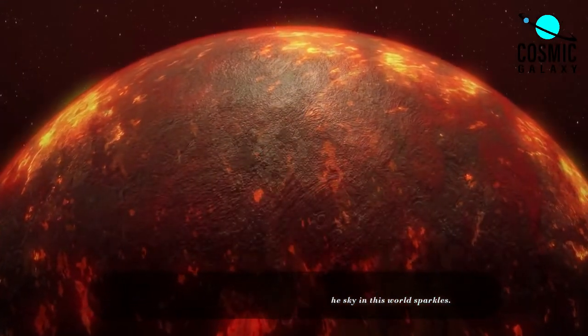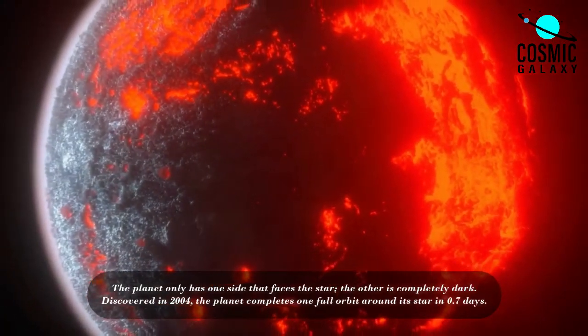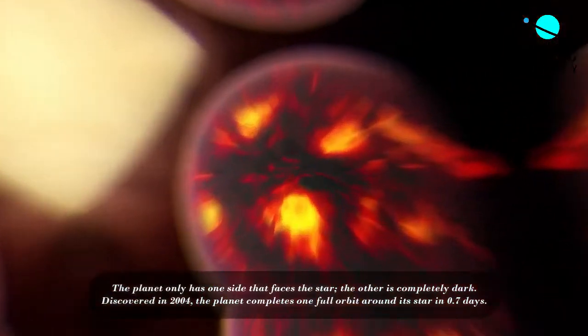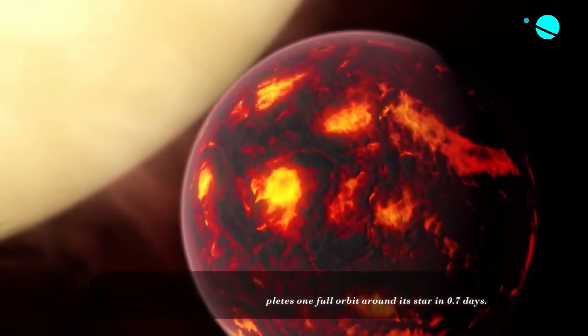The planet only has one side that faces the star, the other is completely dark. Discovered in 2004, the planet completes one full orbit around its star in 0.7 days.